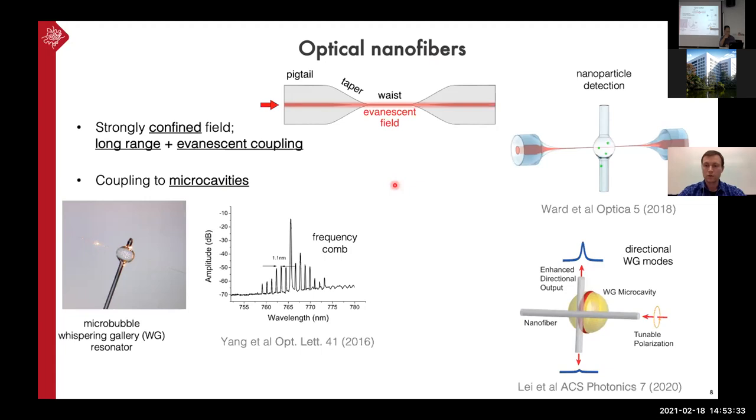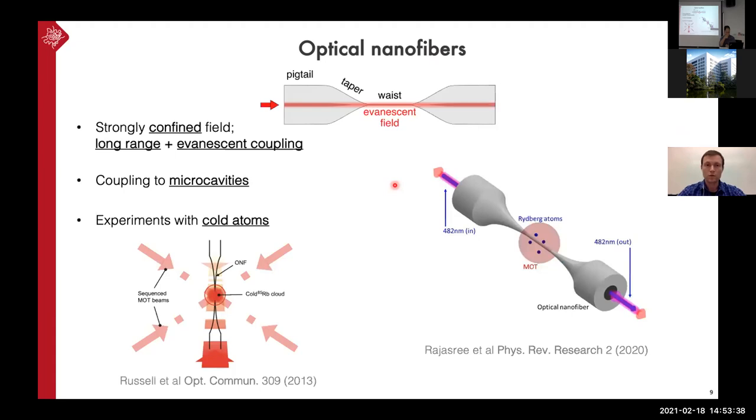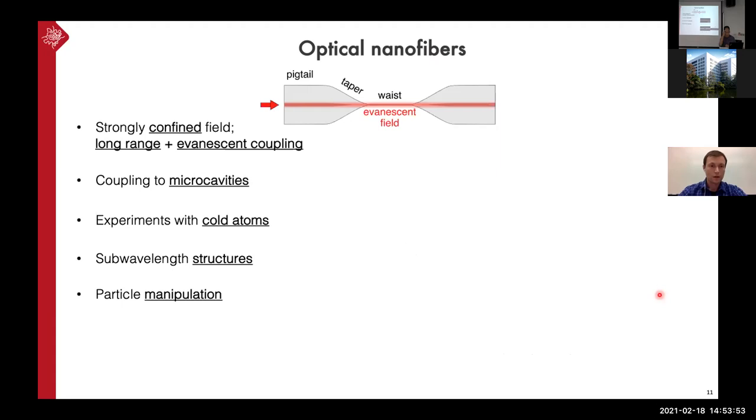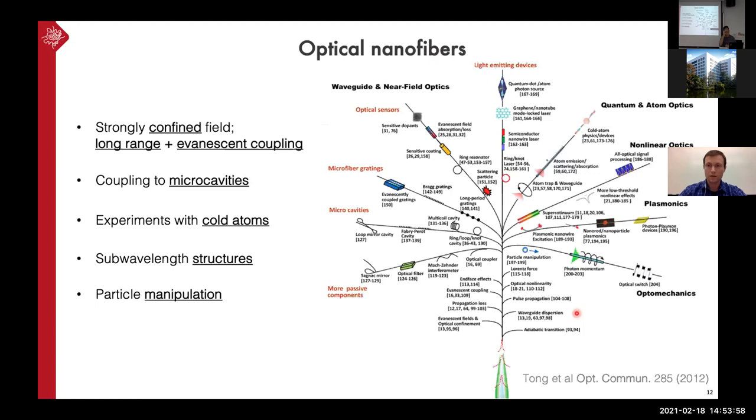In some resonators, we can do experiments with cold atoms. So this was the subject of the talk by Professor Cormack earlier. We can further structure these fibers at the sub-wavelength level to achieve some refined trapping geometries or resonant features. And we can do particle manipulation, about which I'm going to talk today. And this is area of optomechanics, which is actually quite a small branch of this huge tree of applications of optical nanofibers. This is taken from the review by Limin Tong.